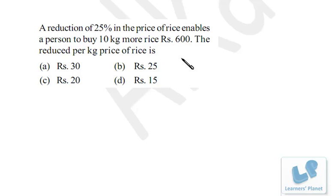The original price is ₹600 for 30 kilograms, so per kilogram it is ₹20. The original price is ₹20 per kilogram. With a 25% reduction, the reduced price is ₹15 per kilogram.